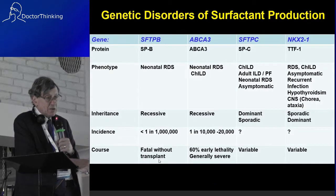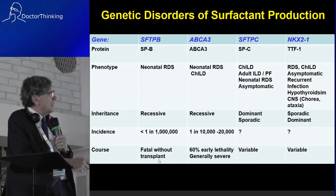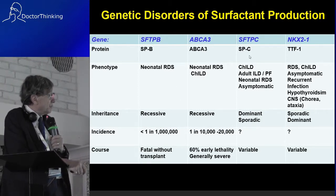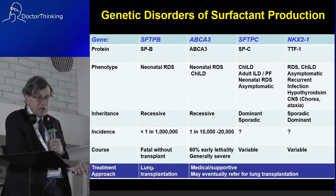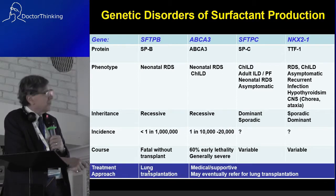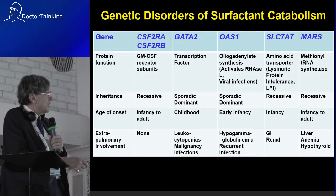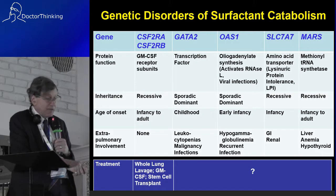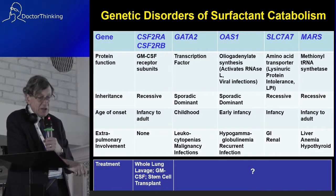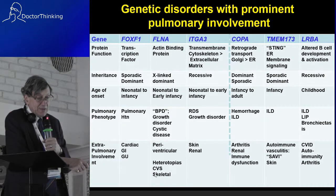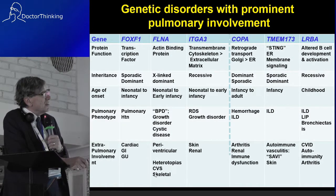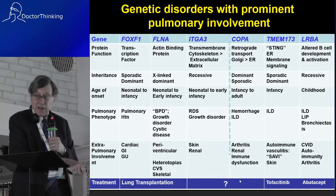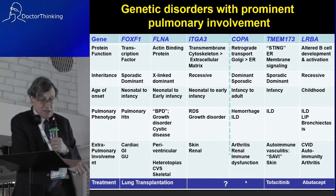The disorders of surfactant production include surfactant protein B, ABCA3, surfactant protein C, and TTF1. Surfactant protein B patients typically die without a lung transplant. For disorders of surfactant catabolism, the important thing is that there are specific treatments like whole lung lavage and increasingly stem cell transplantation. Multi-system diseases are also important — STING (TMEM173) and LRBA are each treatable with a monoclonal antibody, so we really need to make a specific diagnosis.